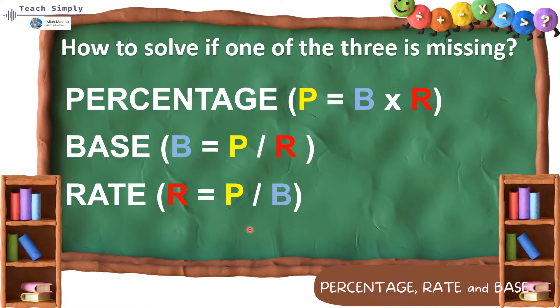Okay, in this case, dapat merong dalawang given at isa lang ang dapat mawala para ma-solve natin. Uulitin natin, if si percentage ang wala, ito yung formula na gagamitin natin. Kung si base naman ang mawawala or hahanapin natin ang base, ito yung formula ang gagamitin natin. At kapag si rate naman ang nawala, this is the formula that we will be using.